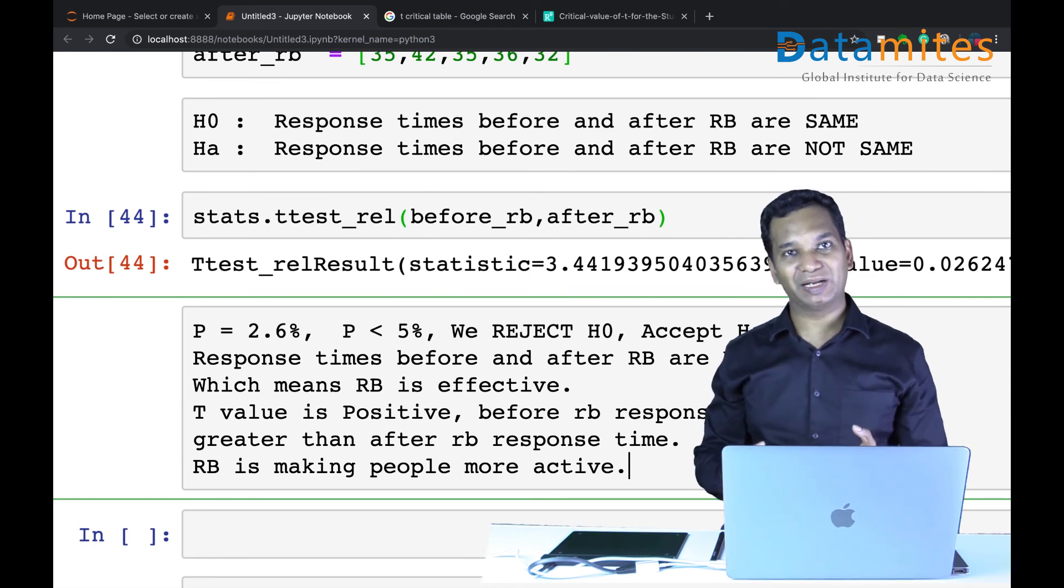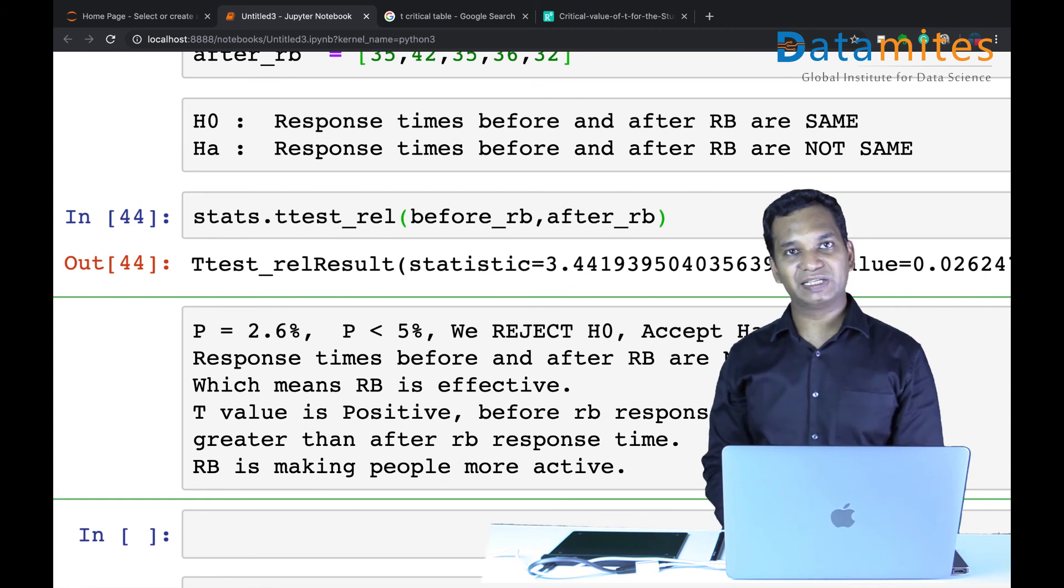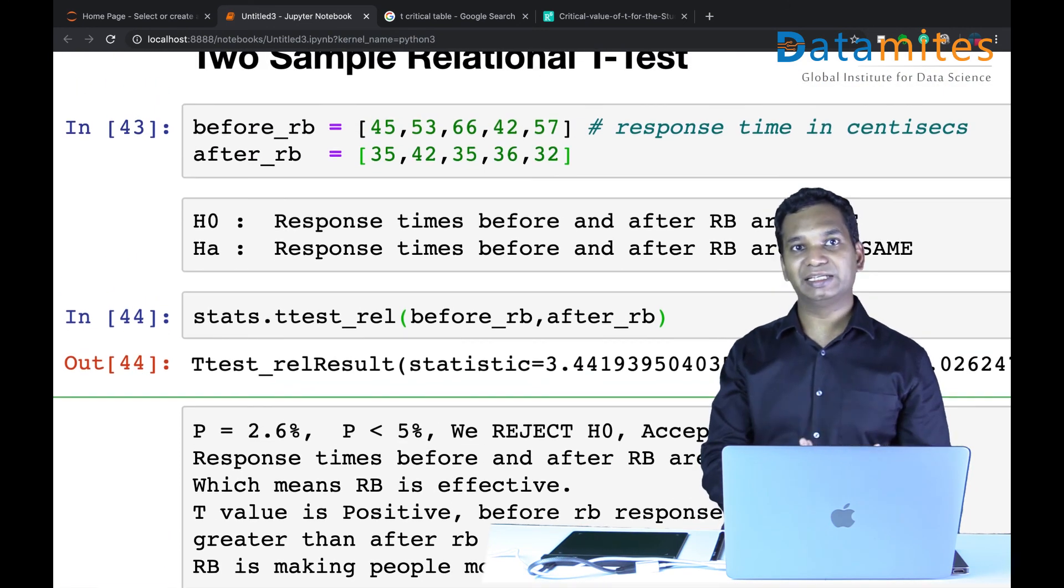This kind of research is done for most food and health-related things, and this is the very standard way of doing things. We use relational t-test for that. Hope this example helps you understand what relational t-test is, one of the highly used tests for proving or disproving phenomena before and after.